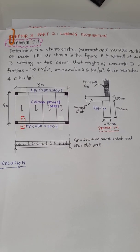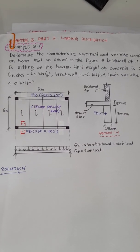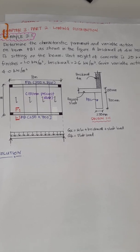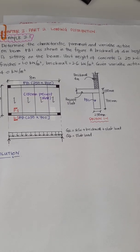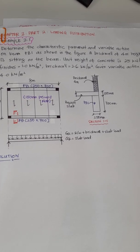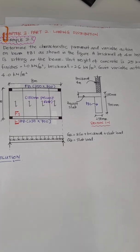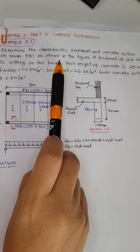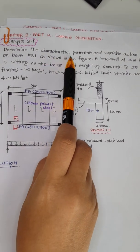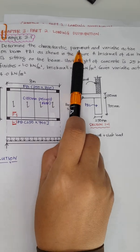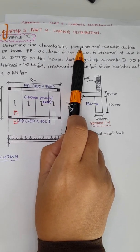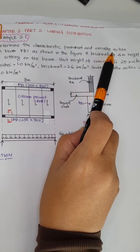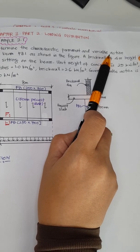Example 3.1 from Chapter 1 Part 2: Loading Distribution. Determine the characteristic permanent and variable action. The characteristic permanent action is GK and the variable action is QK, from Eurocode Part 1.